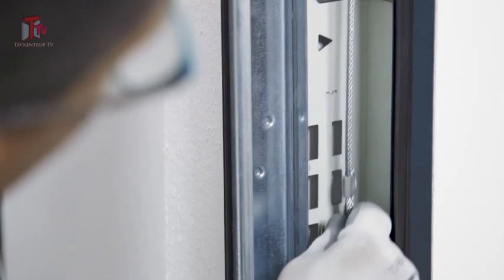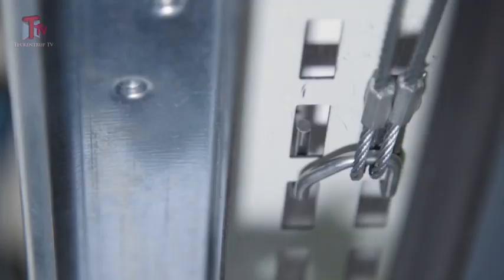If the door comes down too fast, we need more spring tension. This is how we adjust it. Simply hang it into the next following slot.